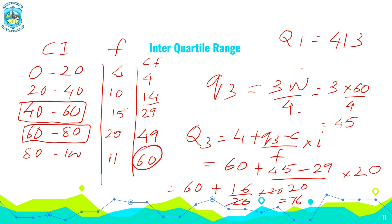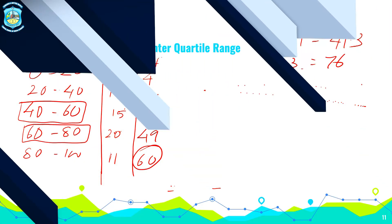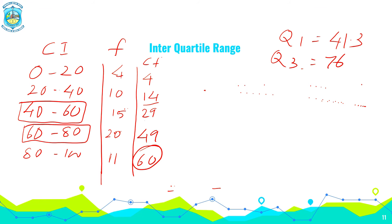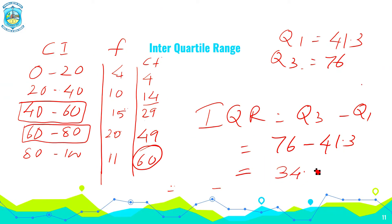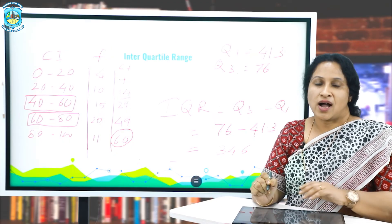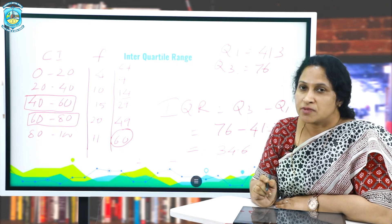So Q3 I'm writing here as 76. So let's calculate interquartile range IQR which is Q3 minus Q1. Just put the values 76 minus 41.3 and whatever is the answer is the interquartile range. So what is the answer you calculated right now? Just do a mental calculation. Are you getting roughly 34.6? If you are getting, you are absolutely right.